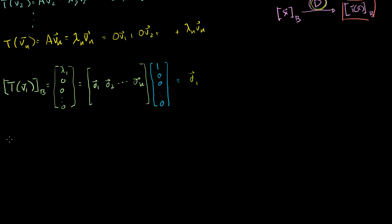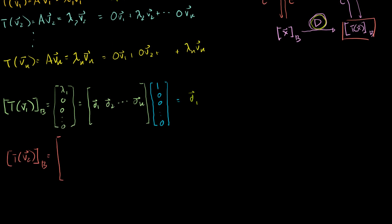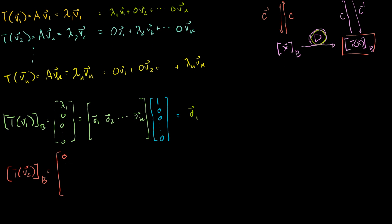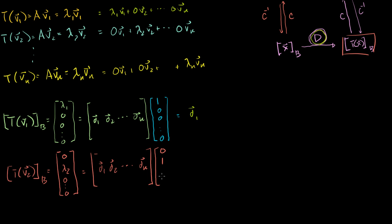The transformation of V2 in our new coordinate system is going to be equal to 0 times V1 plus lambda 2 times V2, then plus 0 times everything else. That's the same thing as D times the B-representation of vector 2. Vector 2 is a basis vector, so its representation is 0 times V1 plus 1 times V2 plus 0 for the rest. So this equals 0 times d1 plus 1 times d2, which is just equal to d2.